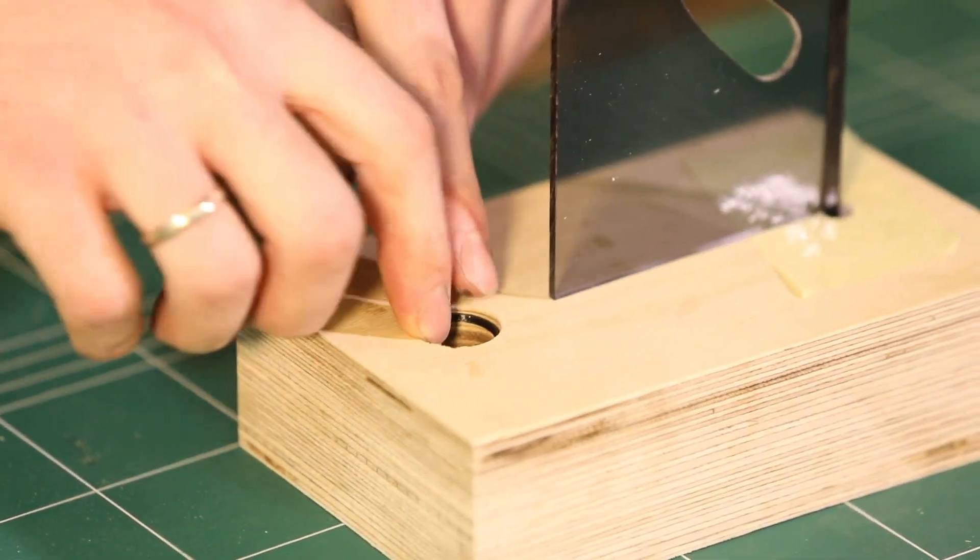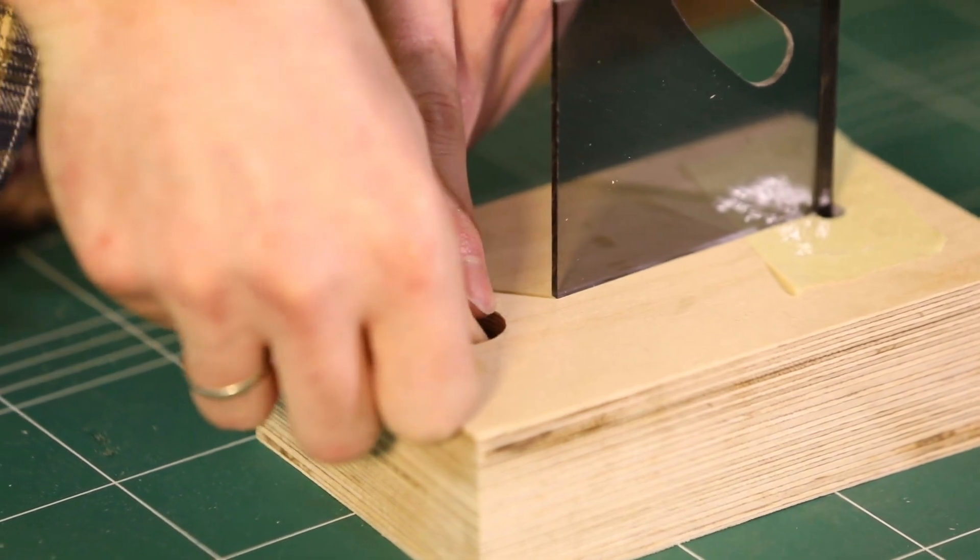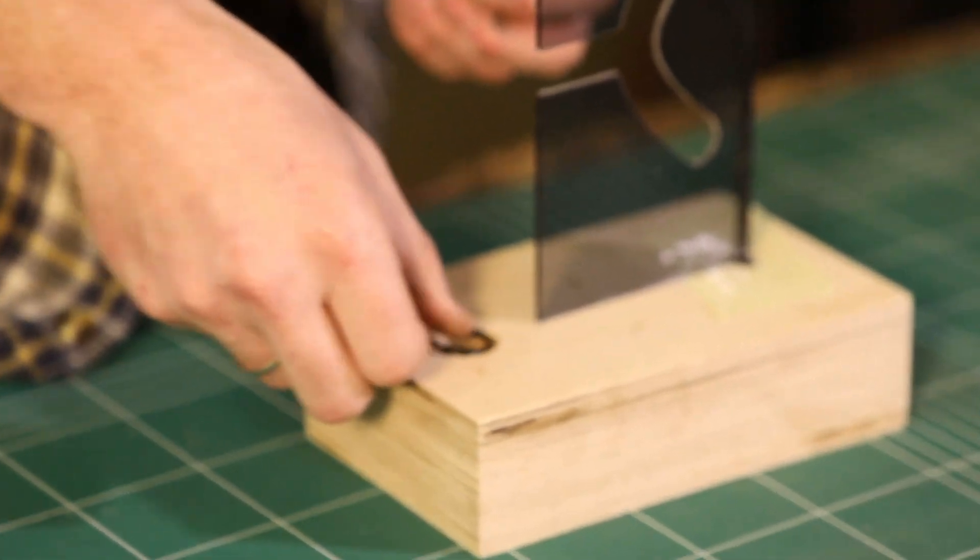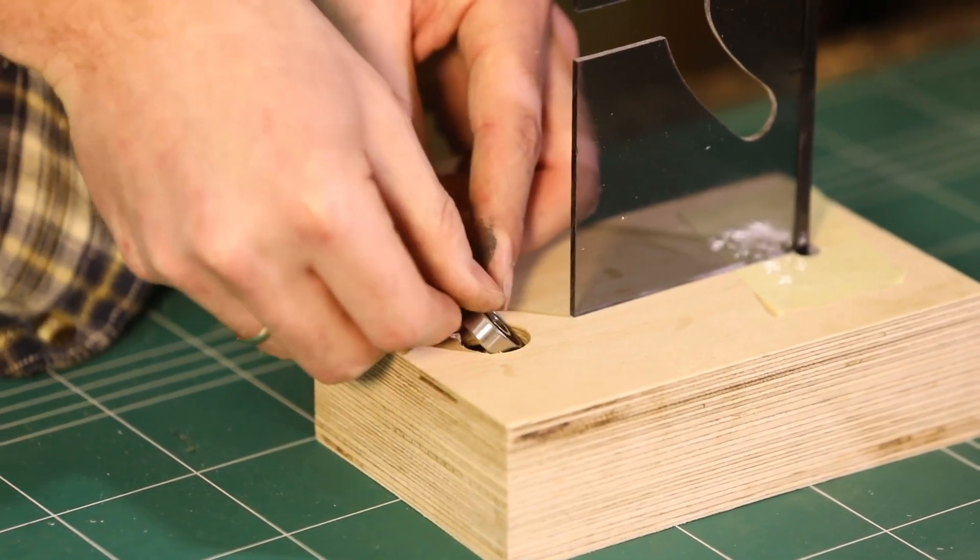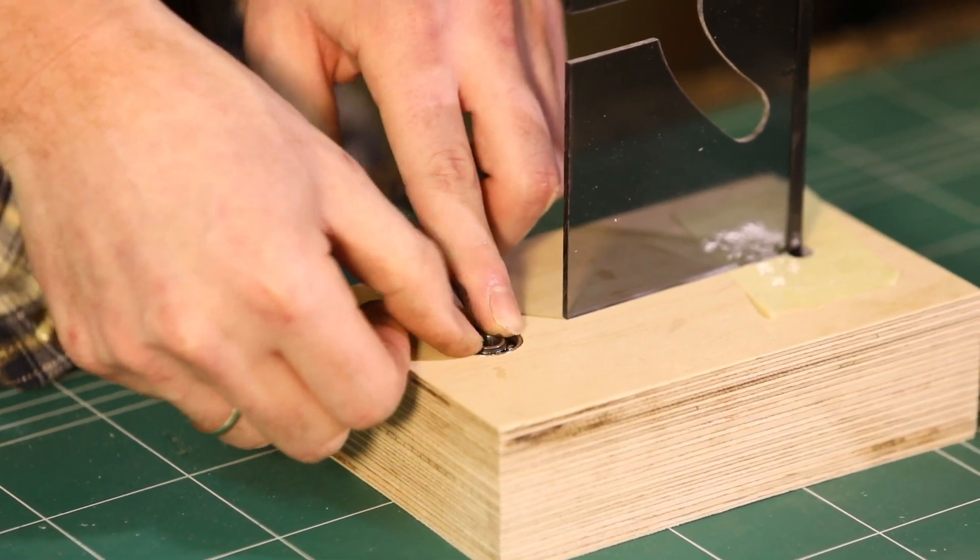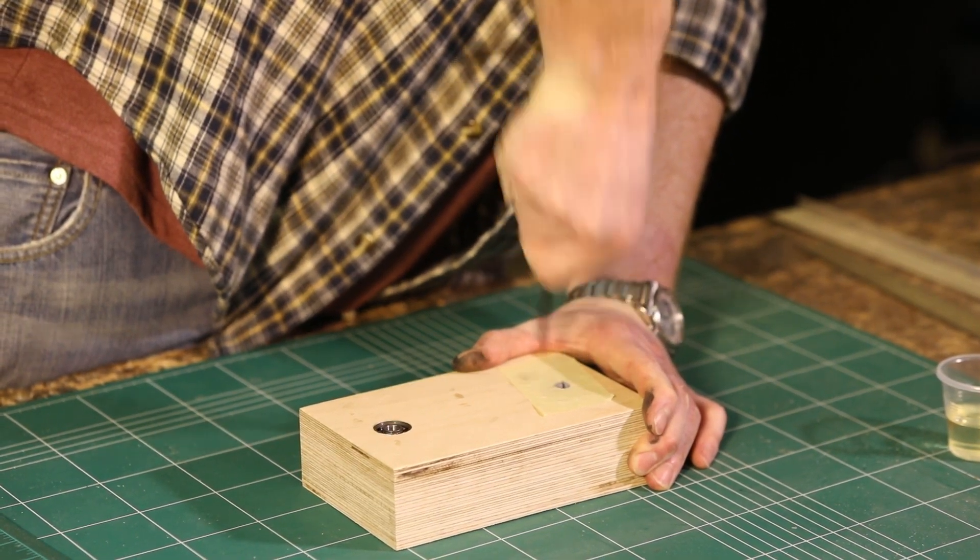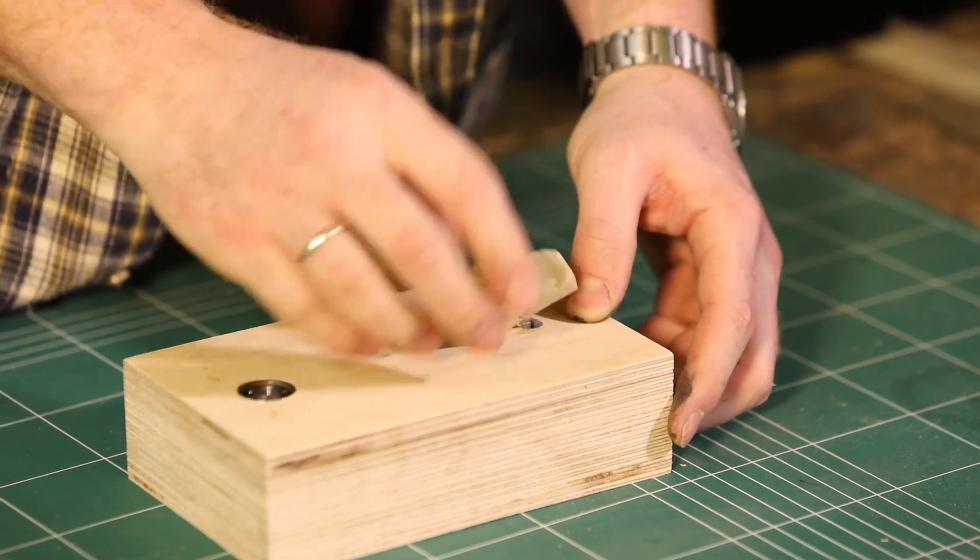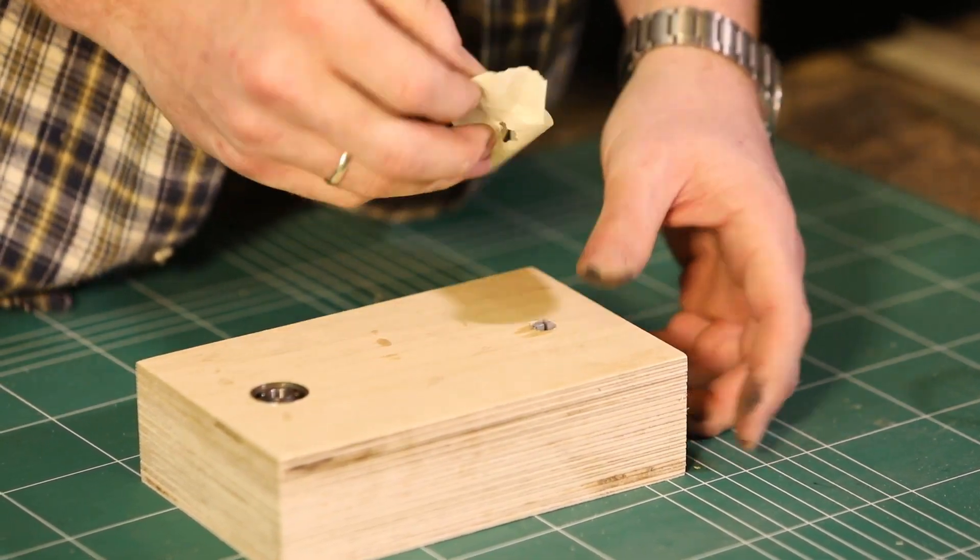Meanwhile, I added 2 skateboard bearings with a couple of 3D printed spacers in between. After the epoxy had cured, I simply pulled out the holder, leaving a hole in the exact shape to accept the curve holder. I gave the base a couple of coats of varnish.